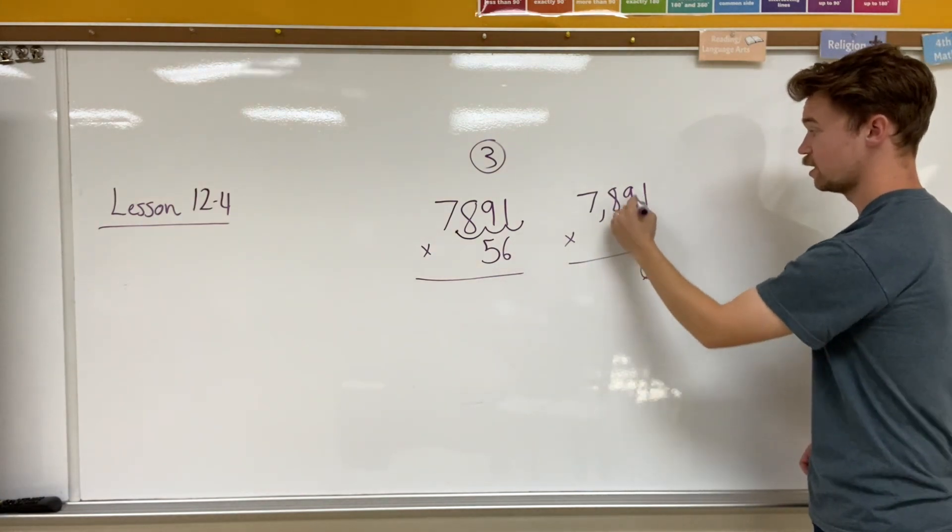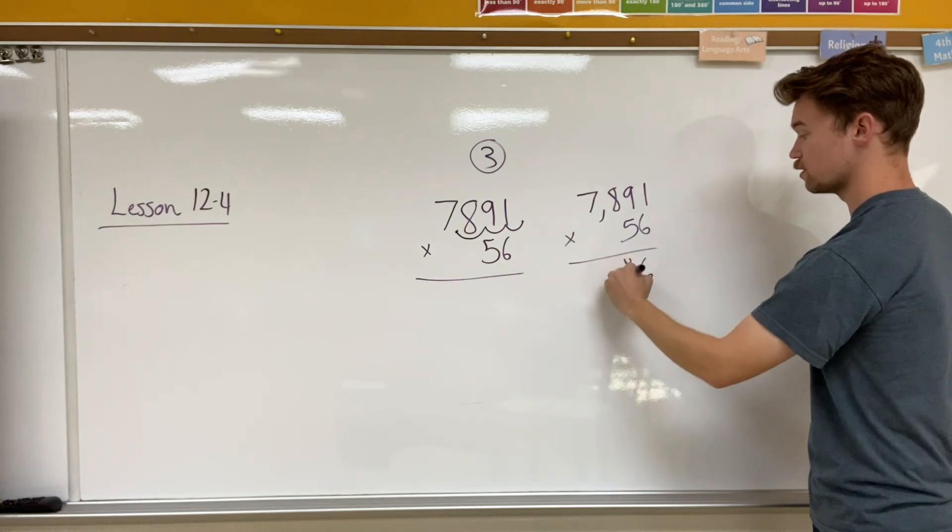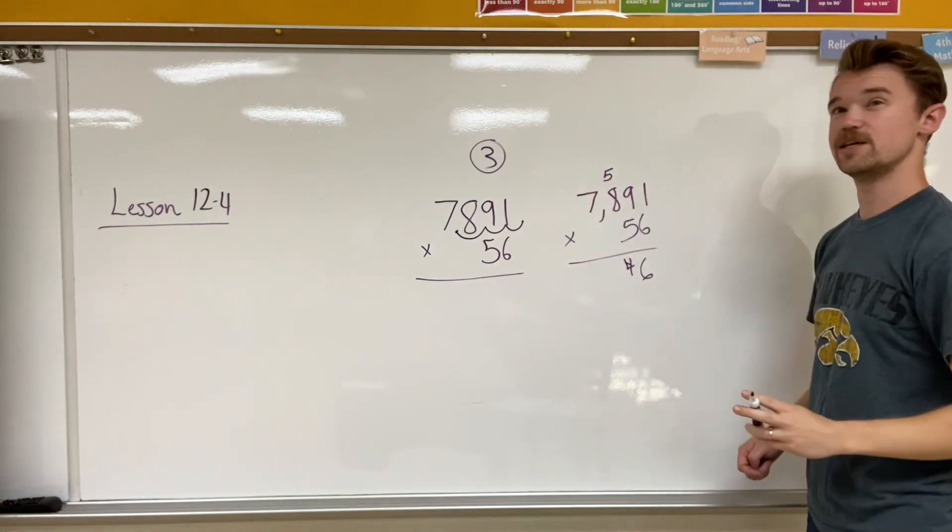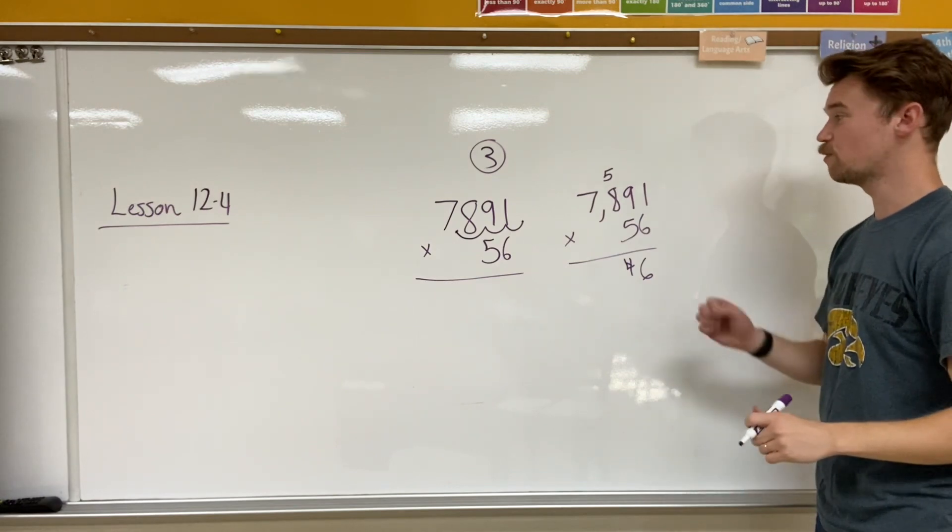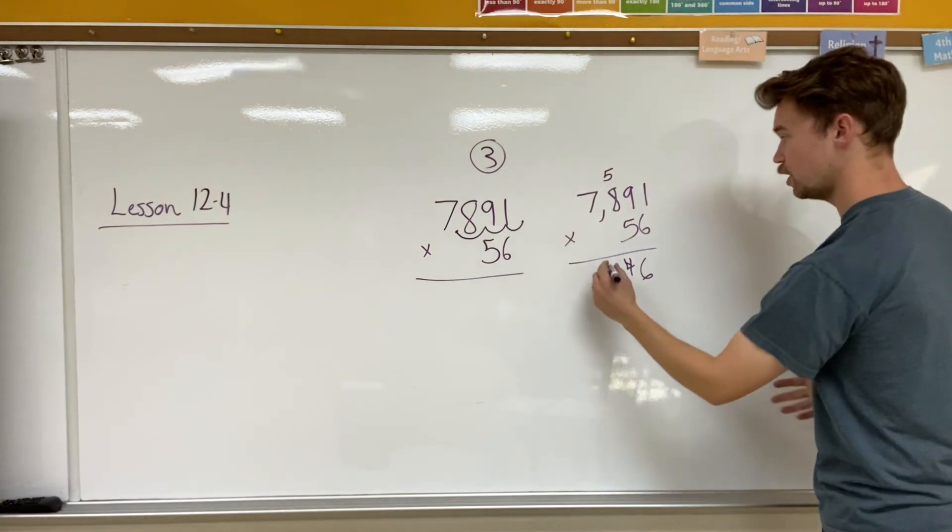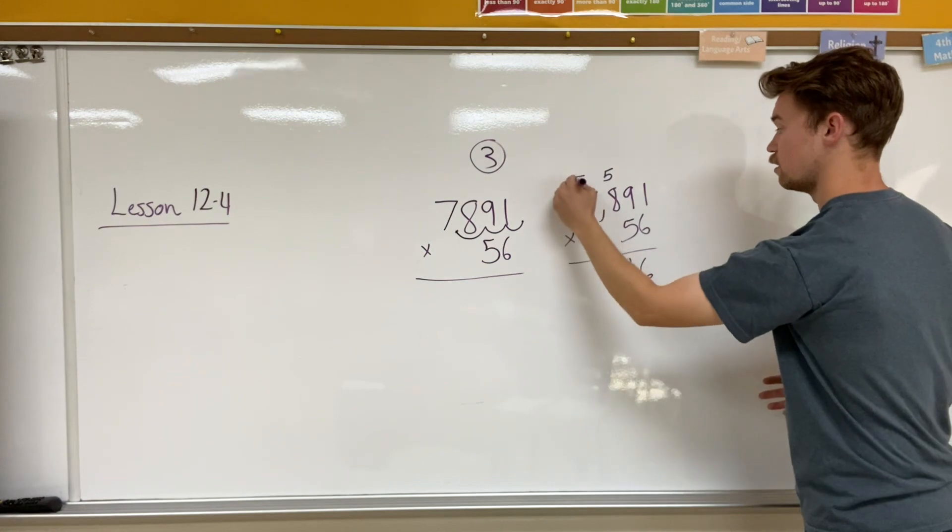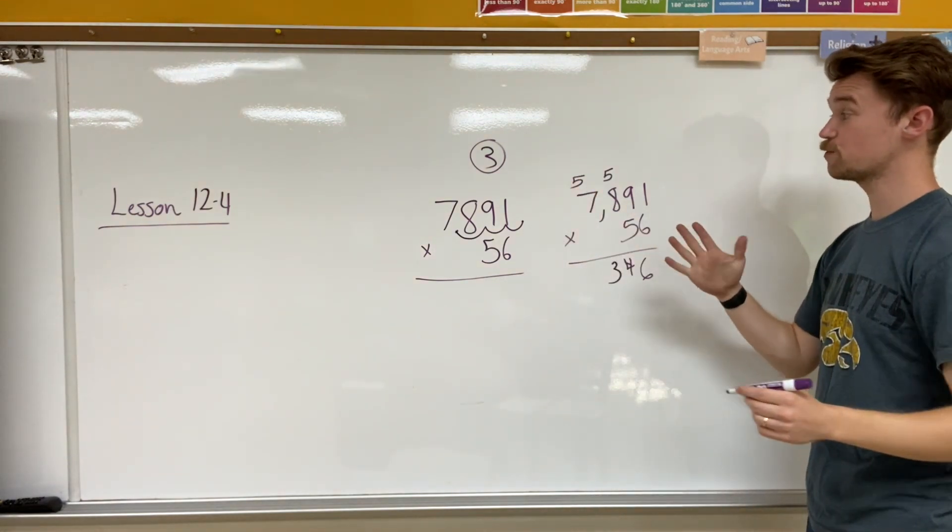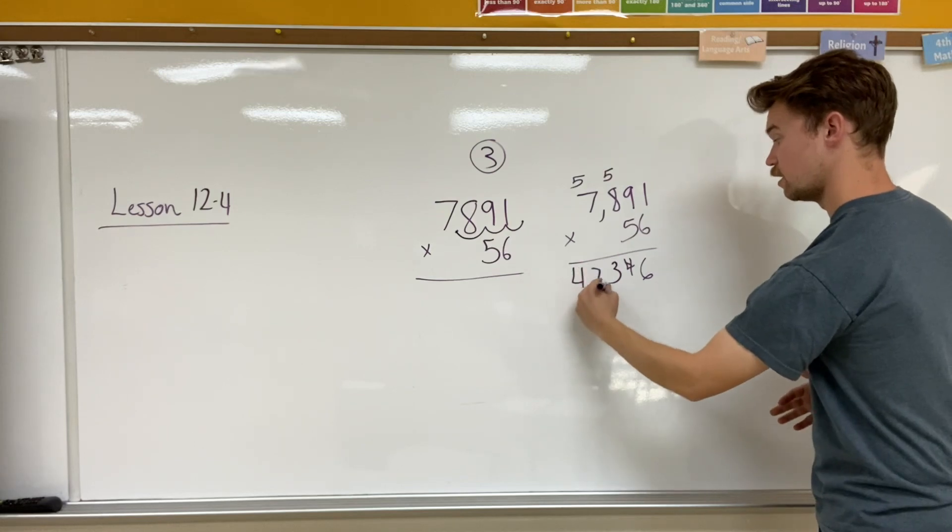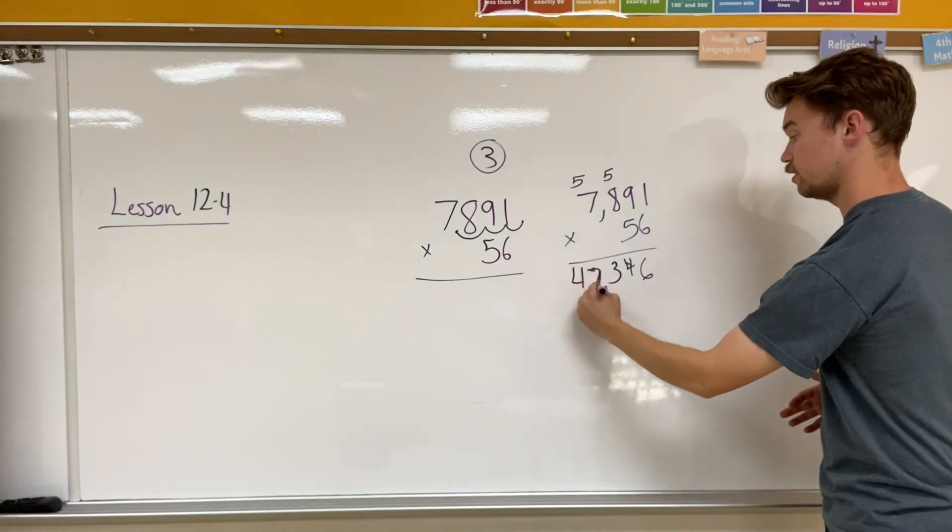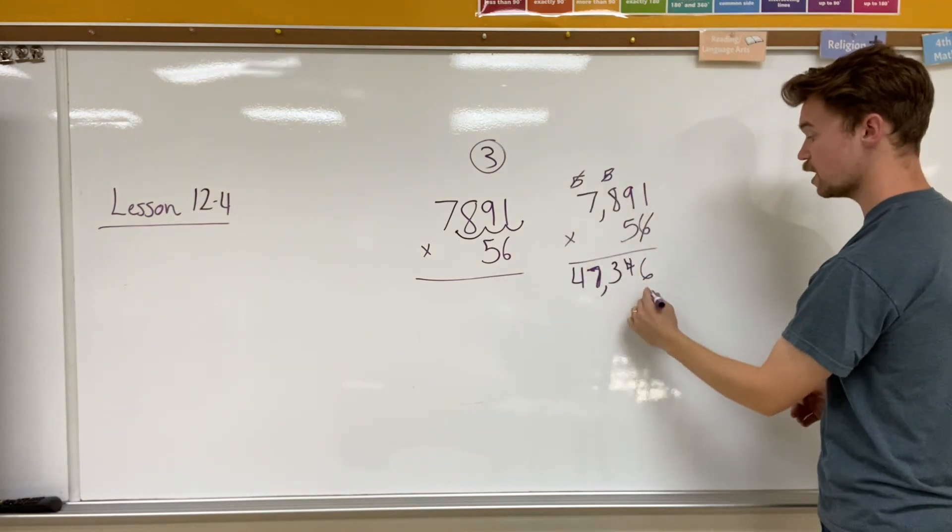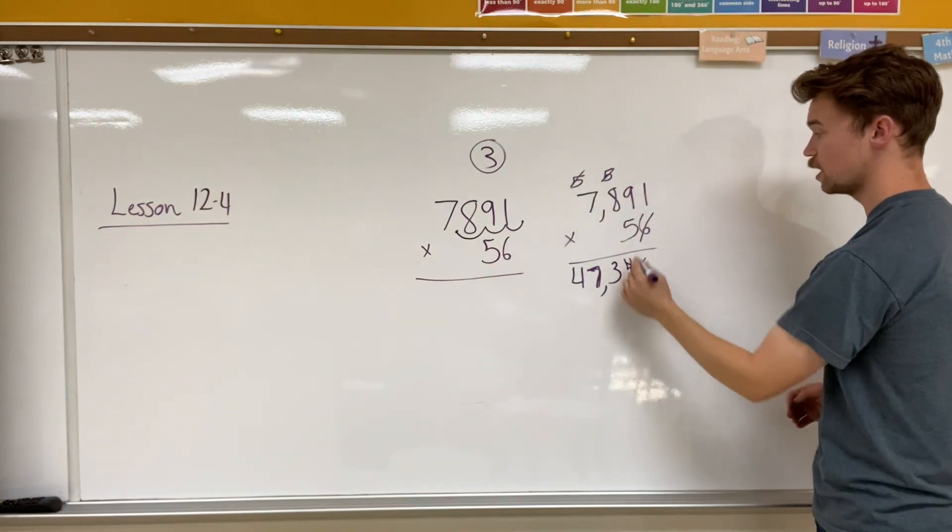6 times 1 is 6. 6 times 9 is 54. That's supposed to be a 4. That's supposed to be a 5. 6 times 8 is 48, 49, 50, 51, 52, 53. And 6 times 7 is 42, 43, 44, 45, 46, 47. I have my comma here. There we go. Cross out the 6. Cross out any numbers that I have used in that section. And I have 0 things left to get.